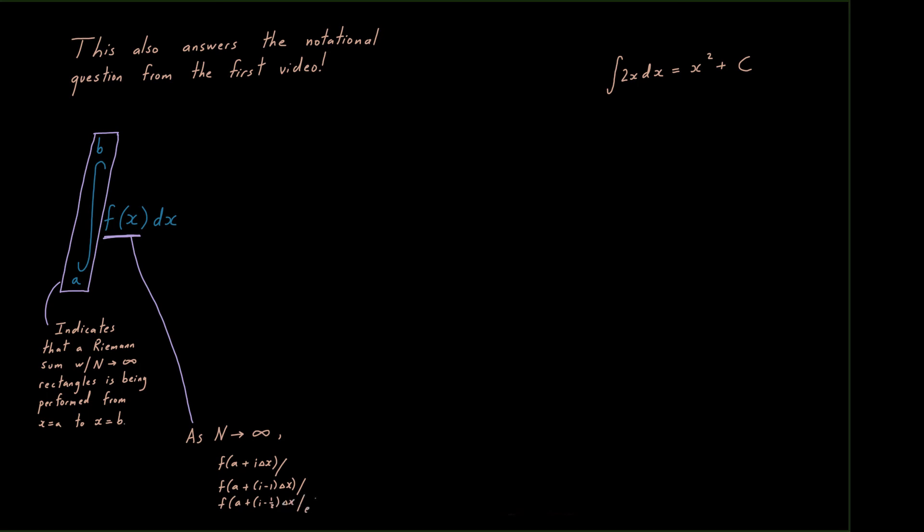And now friends this also answers the notational question from the first video. If you wondered why did we use a dx in our integration what was the justification for that? Well now we have it. First of all, this symbol here is a shorthand for perform an infinite Riemann sum, perform a Riemann sum with n approaches infinity rectangles, that's what that indicates. And now the plain f as opposed to f of a plus i delta x, f of a plus i minus 1 delta x, this reflects the fact that as n goes to infinity those function values, those top points of your rectangles that are touching the graph, actually approach the function value, the full function.